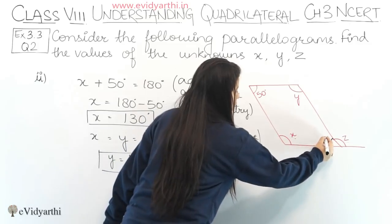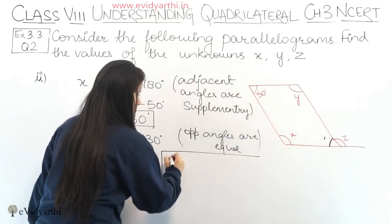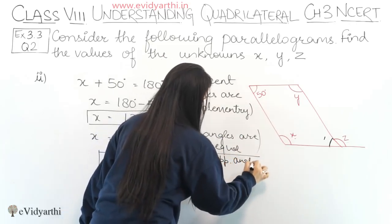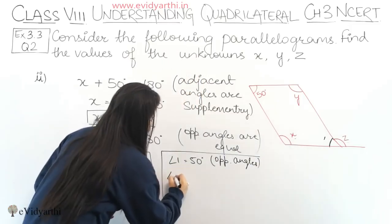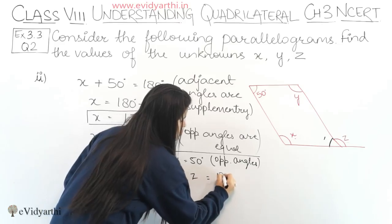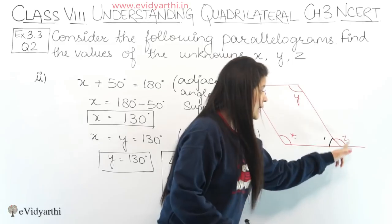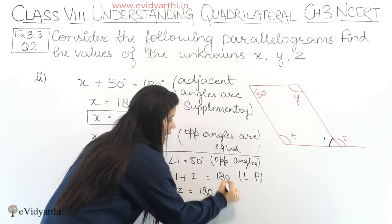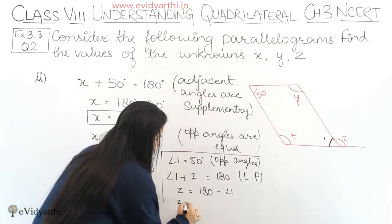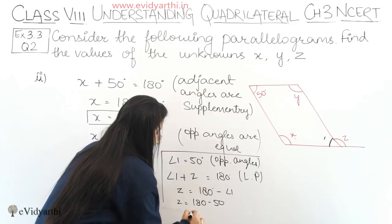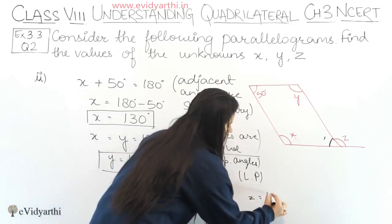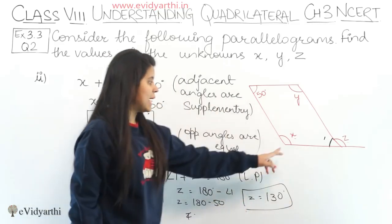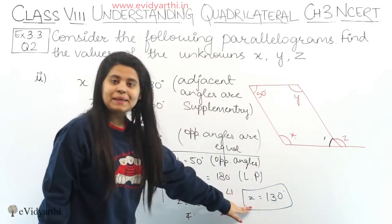Using the longer method: angle 1 = 50° (opposite angles). Then angle 1 + z = 180° because of linear pair. So z = 180 - 50 = 130°. If we had used the direct method: angle x = angle z as corresponding angles, we'd also get z = 130°.